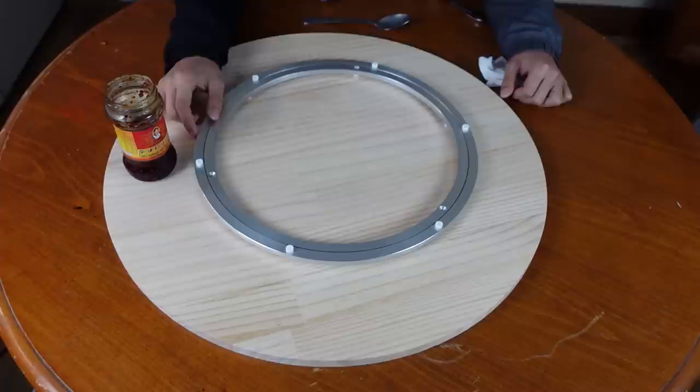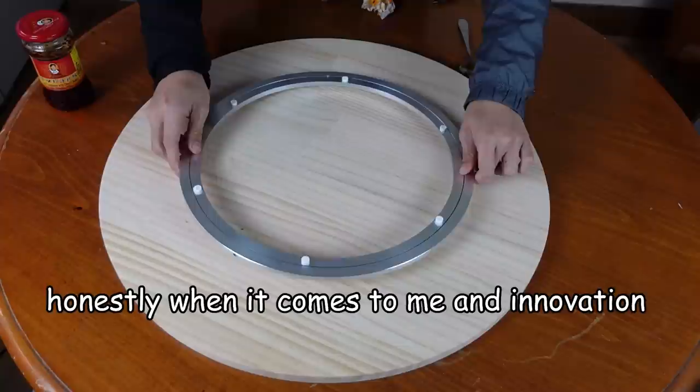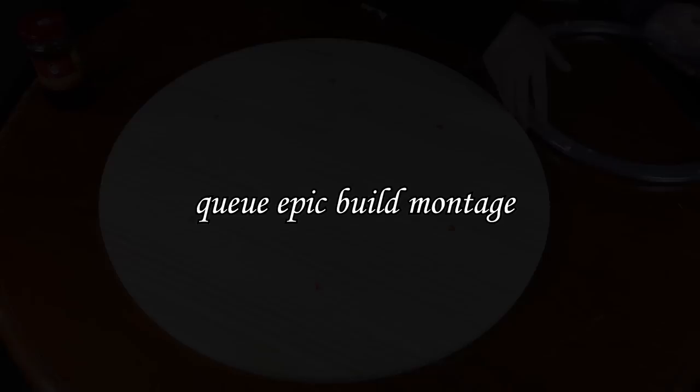So first, we're gonna make a table with a circular hole to attach this onto. I got this hot sauce from the restaurant as well. I'm just gonna use it to mark the overall dimensions with these white rubber feet. Honestly, when it comes to me and innovation, it's getting a little bit out of control. Let's get it started.